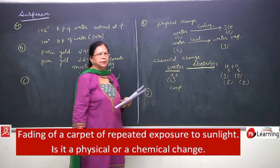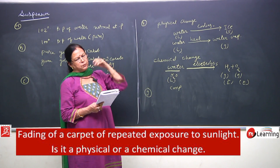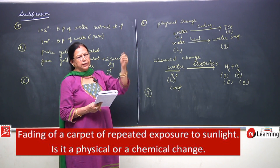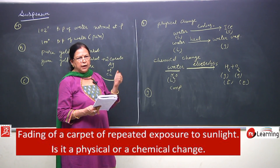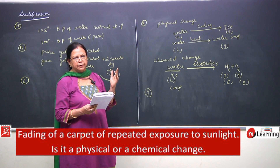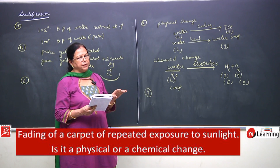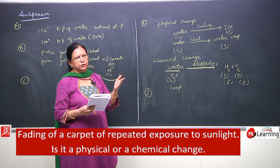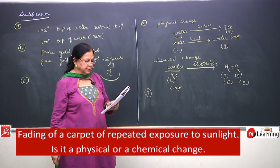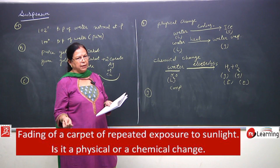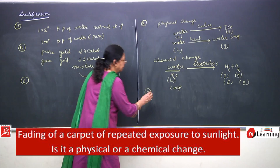You might have seen that when clothes are washed repeatedly and exposed to sunlight, they get faded. Similarly, a carpet exposed to sunlight loses its color. This is a very common experience. So, is it a physical change or a chemical change? It is a chemical change.